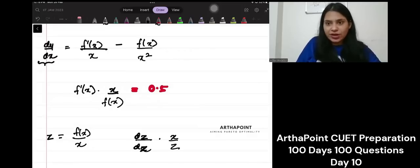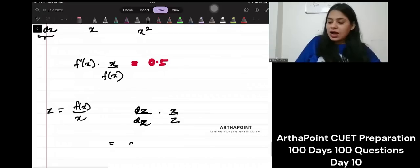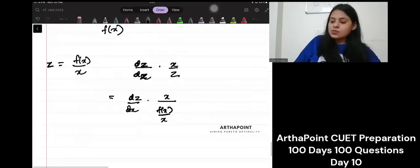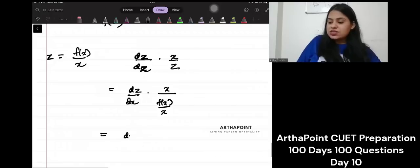How z changes as x changes into x by z. This is exactly what I want. So, this will be how z changes as x changes into x by what is z? Z is fx by x. So, this is how z changes as x changes into x square by fx.